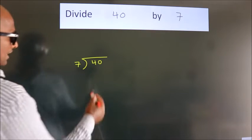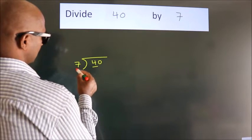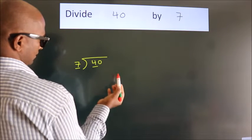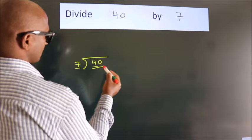Next, here we have 4, here 7. 4 is smaller than 7, so we should take two numbers: 40.